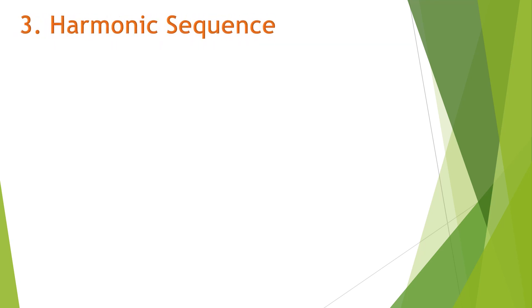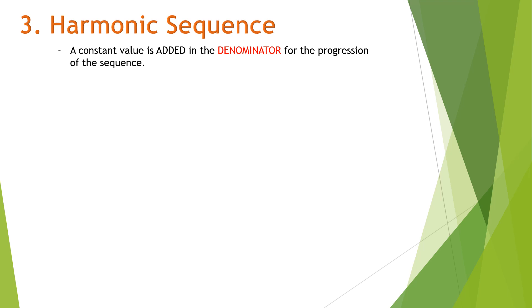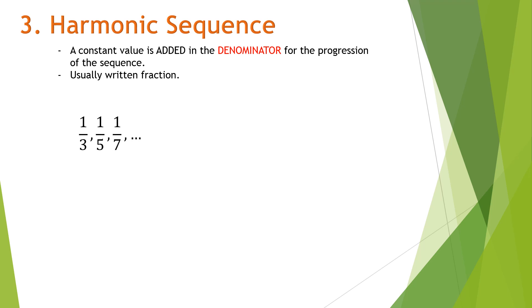The third type is known as the harmonic sequence. In a harmonic sequence, a constant value is added in the denominator for the progression of the sequence. Harmonic sequence is usually written in fraction form. For example: 1/3, 1/5, 1/7. The numerator doesn't change, but the denominator changes from 3 to 5 to 7 — positive 2 is being added on the denominator, so this falls under harmonic sequence.